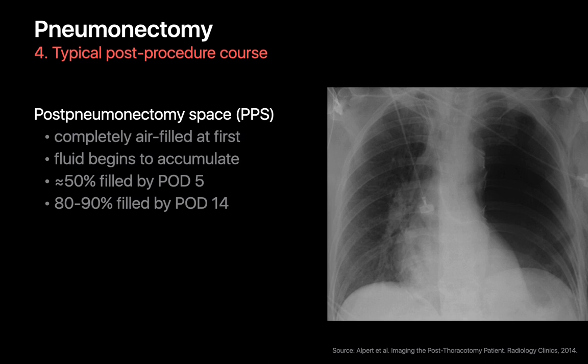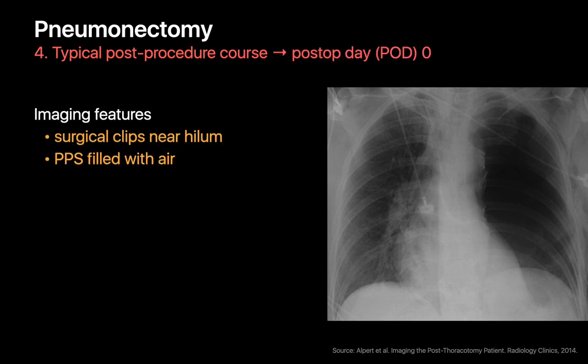Let's review the imaging findings you should expect on chest x-rays during a typical post-pneumonectomy course. On post-op day 0, the post-pneumonectomy space will be completely filled with air and appear entirely lucent — as seen on this patient's left side. You'll also probably see some new surgical clips near the hilum from the surgery.